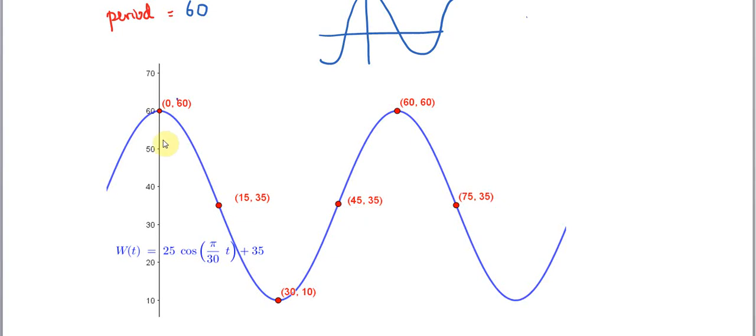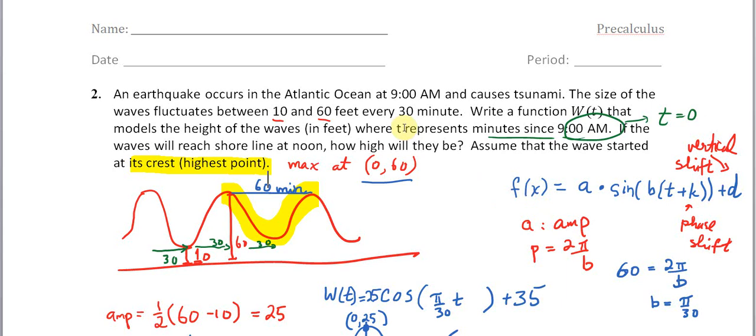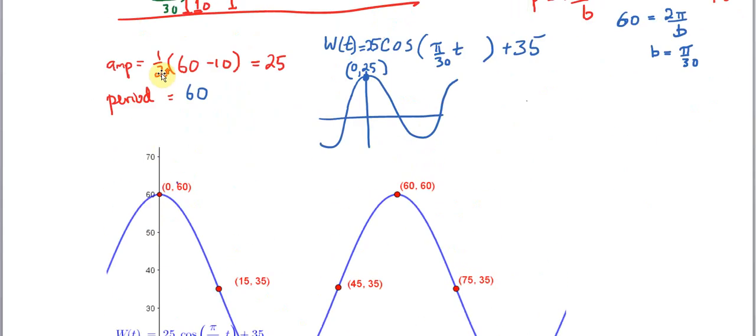And you can see the middle points of the waves here is occurring at 35. So we can see that this wave matches the description of everything that's in the problem. It goes from 10 to 60 every 30 minutes and then it starts out at a maximum.